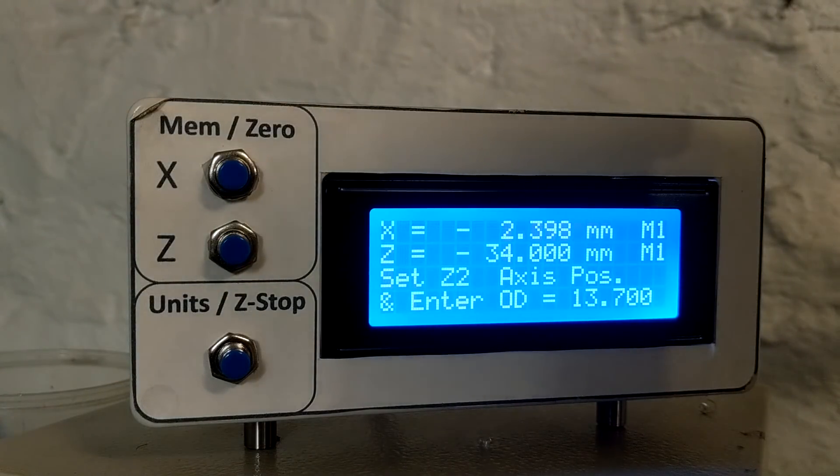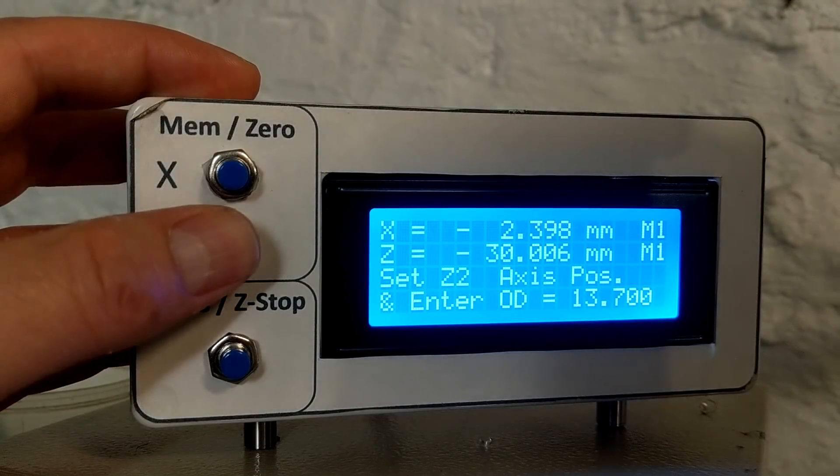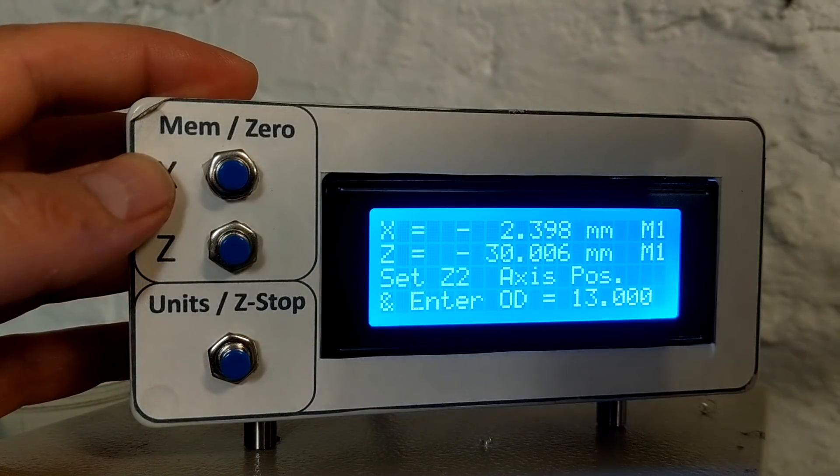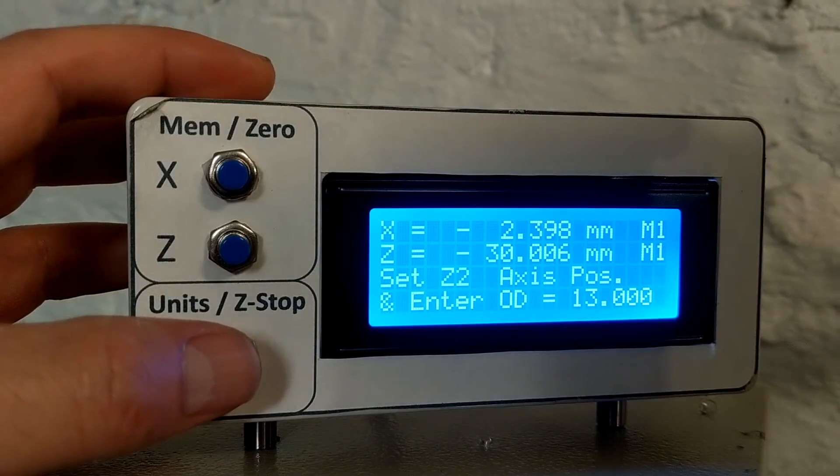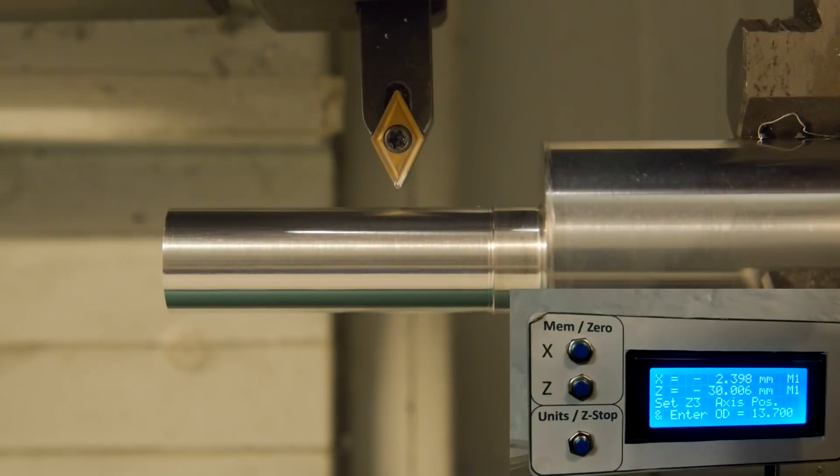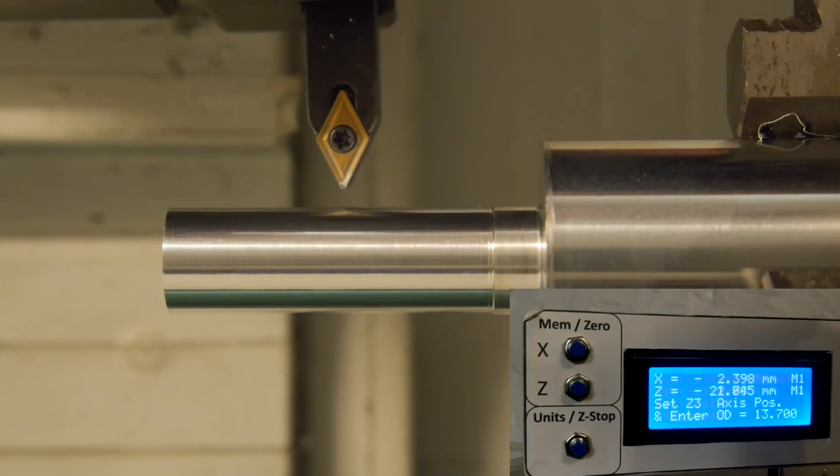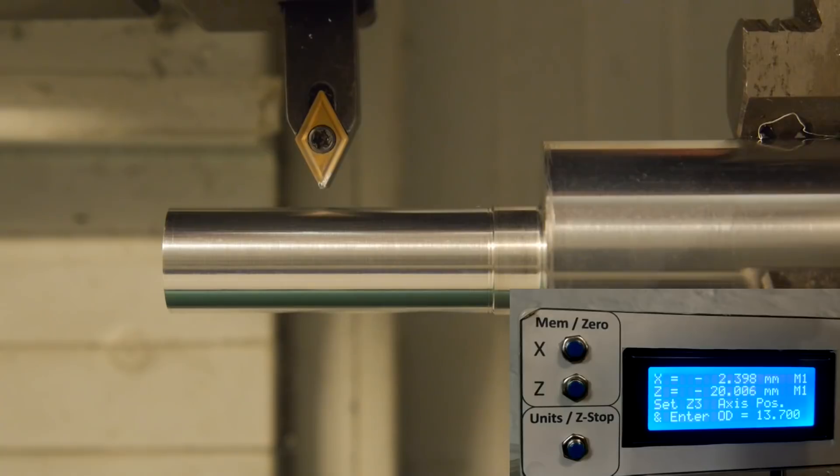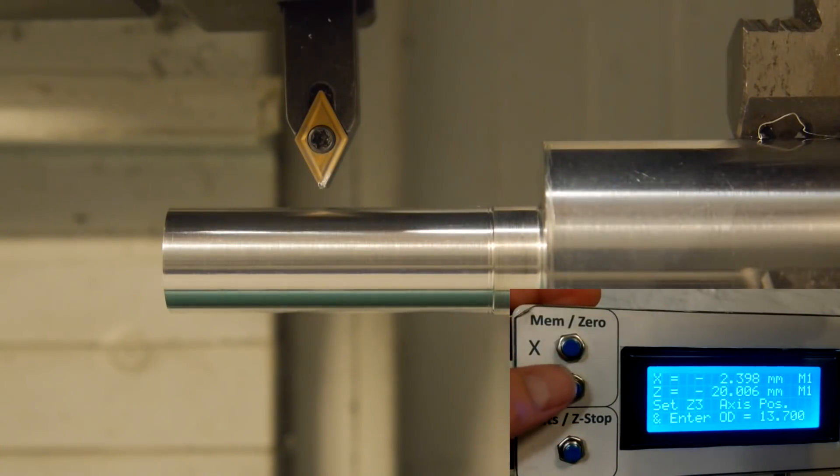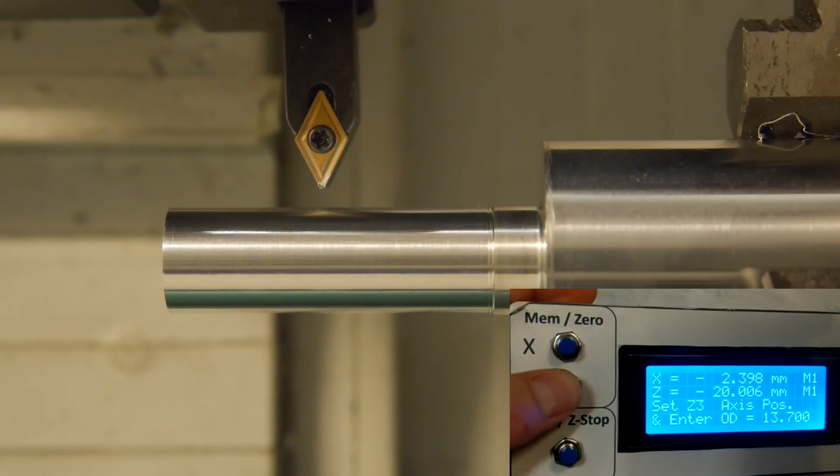Point number two is at 30 millimeters position. Yes, here's the resolution of the Z axis. It's about 12 microns. So I won't be able to hit 30 exact. And that diameter is also 13. So that's just a straight profile there. Point three. At 20 is the position. Again. And the diameter here is eight.